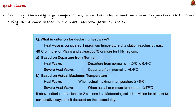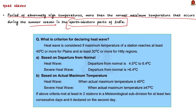A heat wave is a period of abnormally high temperatures — more than the normal maximum temperature — that occurs during the summer season in the northwestern part of India. Heat waves typically occur between March and June and in some rare cases can extend till July. The IMD criterion for declaring a heat wave: it is considered if the maximum temperature of a station reaches at least 40°C or more for plains, and at least 30°C or more for hilly regions.